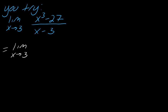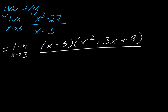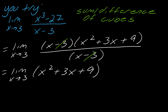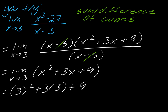This one can be a little tricky to factor — it uses the difference of cubes. I'll write out the factorization. You can look up the sum or difference of cubes formula if you forgot it — it's a really common type of problem in calculus but also very common to forget. After factoring, the x minus 3's drop out, leaving the limit as x approaches 3 of x squared plus 3x plus 9. Since this is just a polynomial, I can plug in 3: 3 squared plus 3 times 3 plus 9 gives 9 plus 9 plus 9, which equals 27.